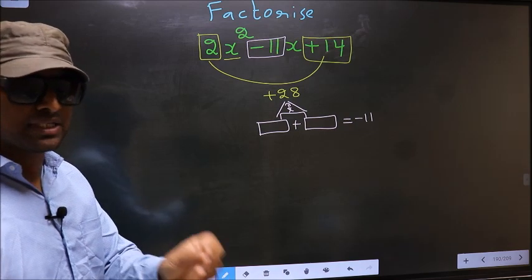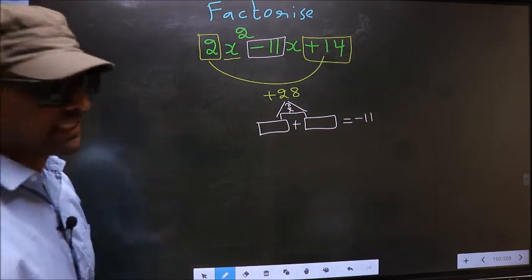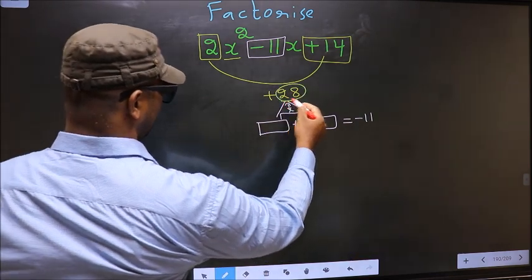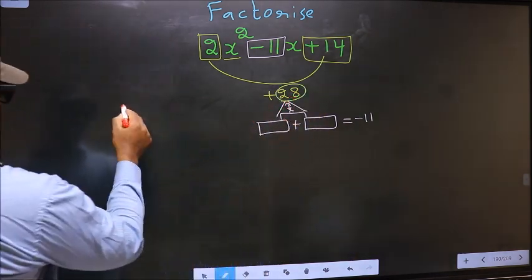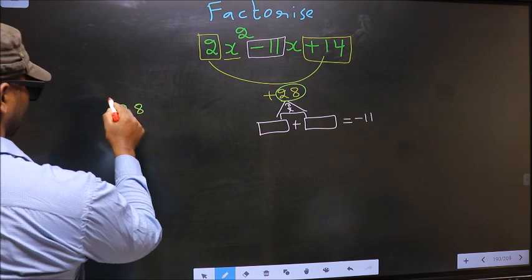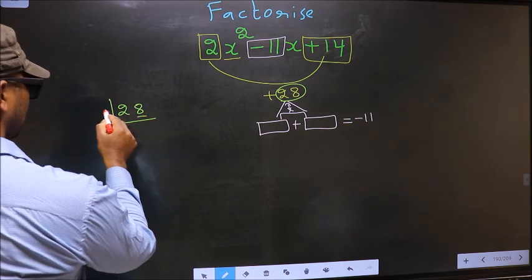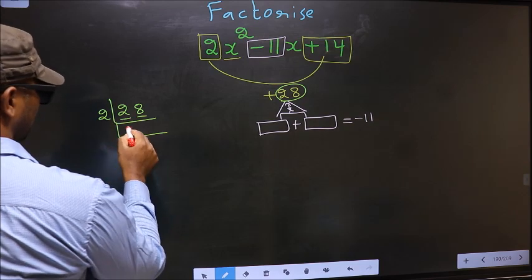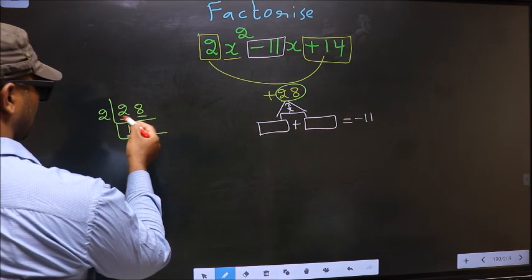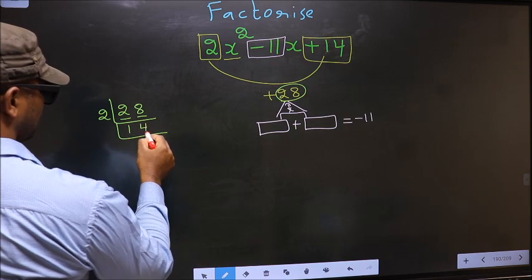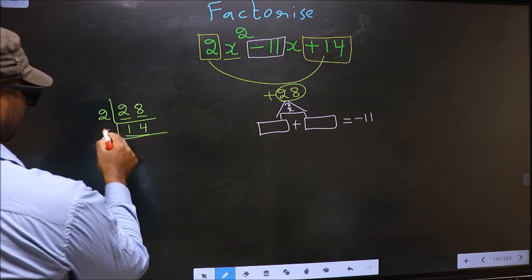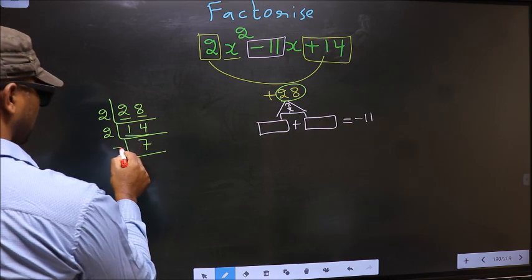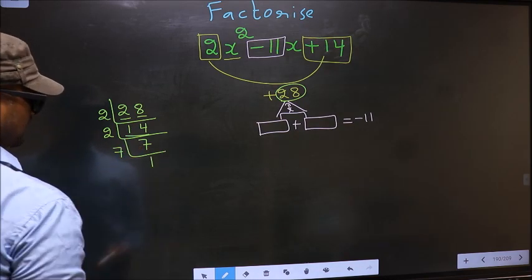To get those two numbers, we should take LCM of 28. The last digit 8 is even, so take 2. The first number 2: 2 ones is 2. The other number 8: 2 fours is 8. Now here we have 14: 2 sevens is 14. Now 7 is a prime number, so 7 ones is 7.